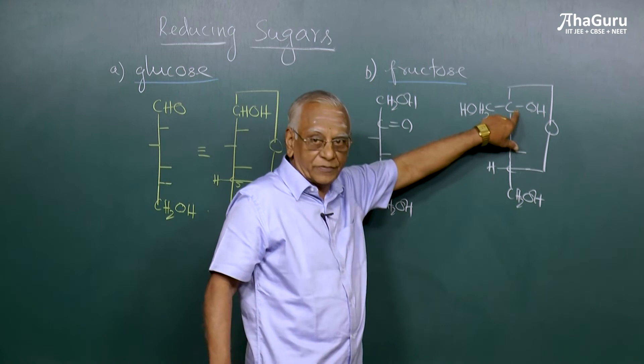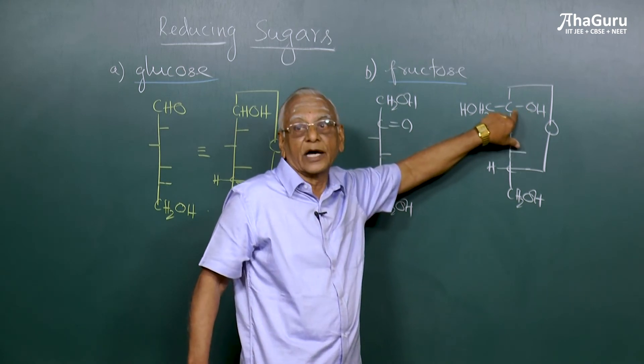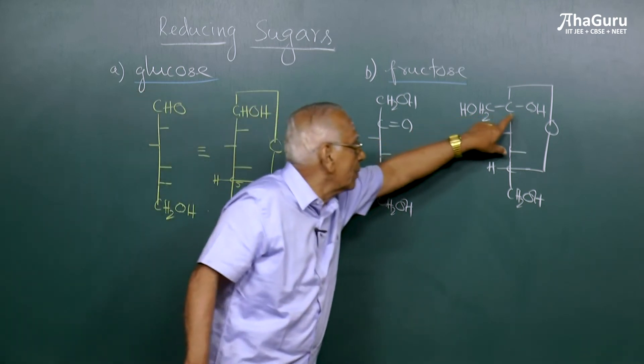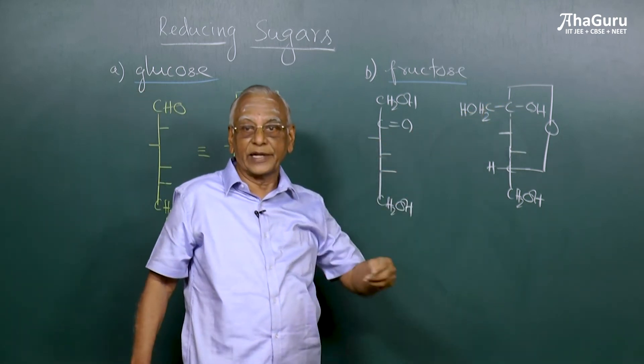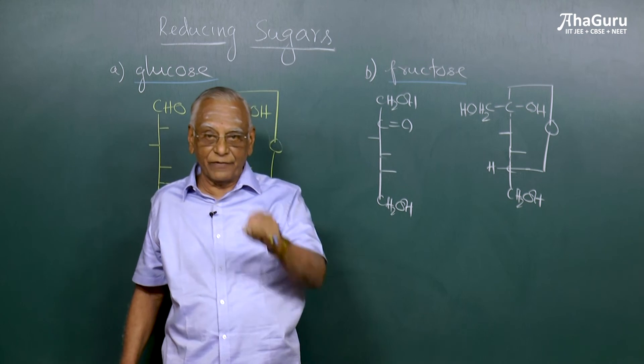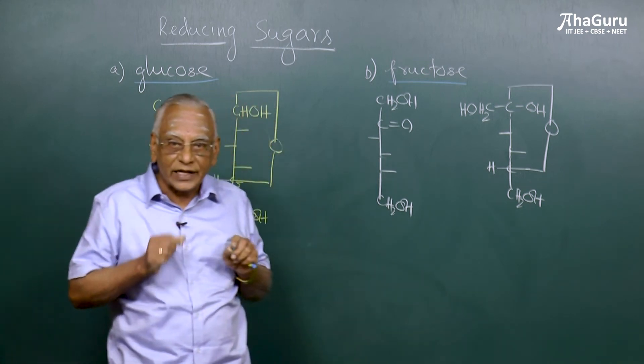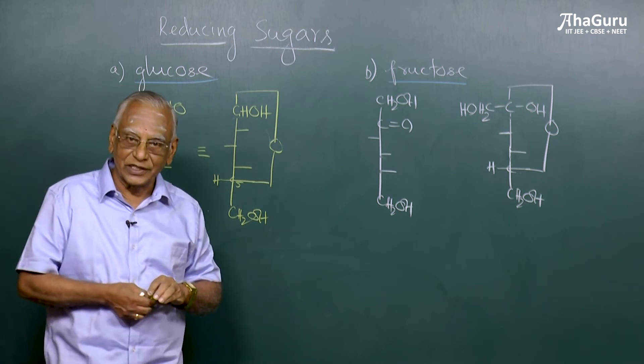And the C2 carbon atom, which has got the free group, that is called anomeric carbon. The C1 carbon atom of an aldose and C2 carbon atom of a ketose, they are called anomeric carbon atom. In general, if a molecule has got the free OH group at the anomeric carbon, then it is identified as reducing sugar.